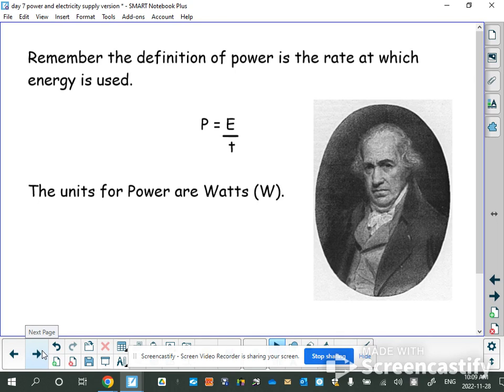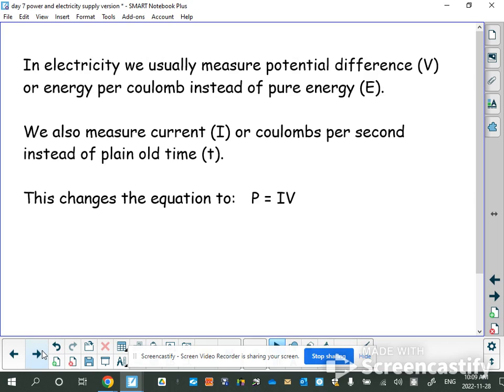When we look at power and electricity, we're going to make a few minor adjustments because we're no longer measuring energy and time. Instead of measuring pure energy E, we're measuring potential difference or energy per coulomb. The reason is that pure energy constantly changes - you turn on a light bulb and energy keeps building - whereas the potential difference doesn't change as long as the circuit is unchanged. This makes it much easier to work with. We also measure current, which is coulombs per second. This gets time into it because of the per second part, and it's not plain old time which depends on how long you have the circuit on.